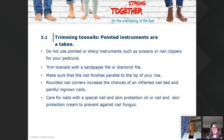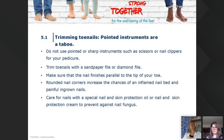Make sure the nail finishes parallel to the tip of the toe. If they trim themselves at home, show them how. Rounded nail corners increase the chance of inflamed nail bed and painful ingrown nails — when you take that corner away, the nail grows with a spike that goes into the nail wall. Care for nails with a special nail and skin protective oil or nail and skin protection cream to prevent against nail fungus.